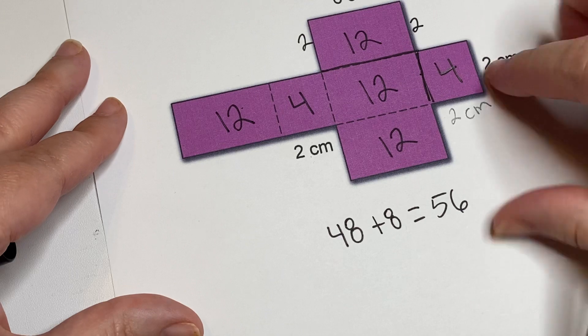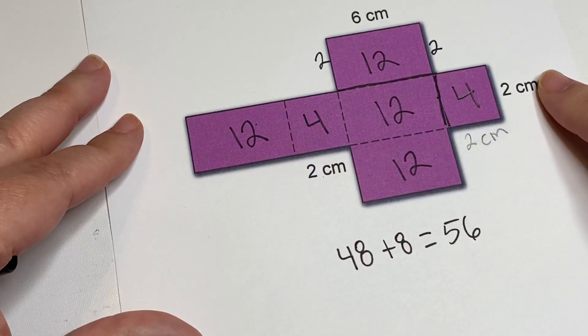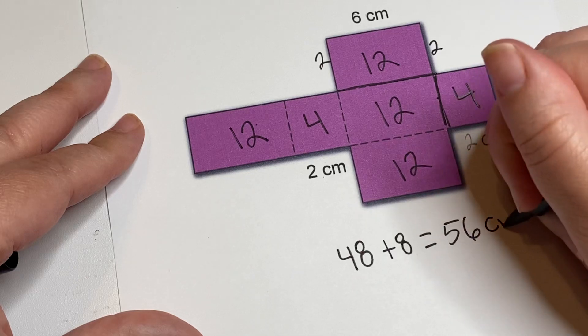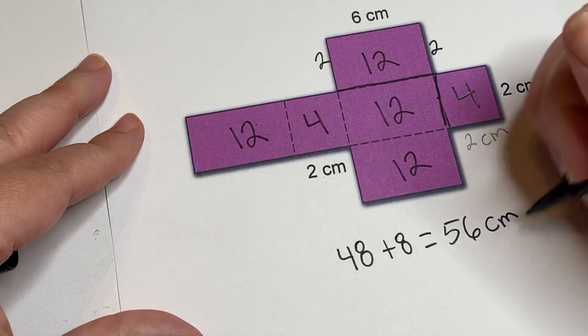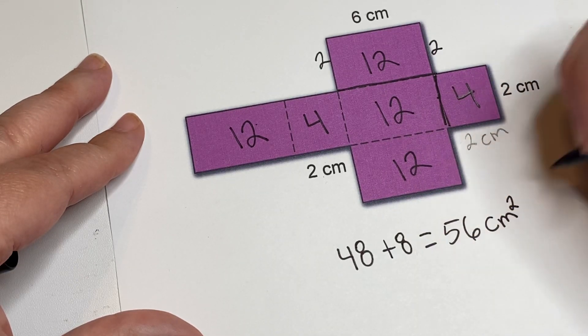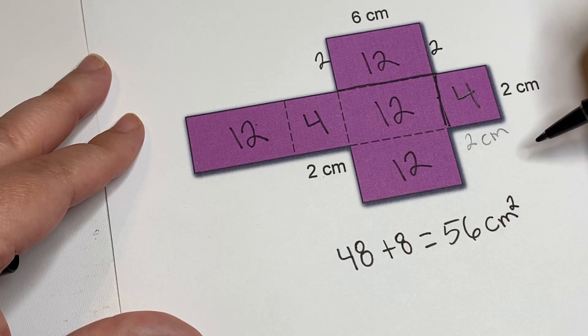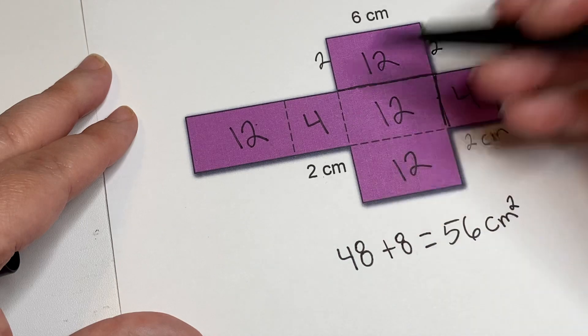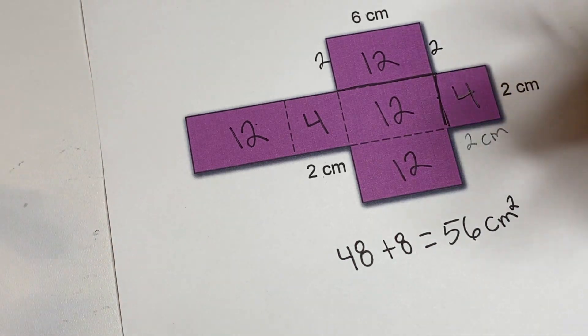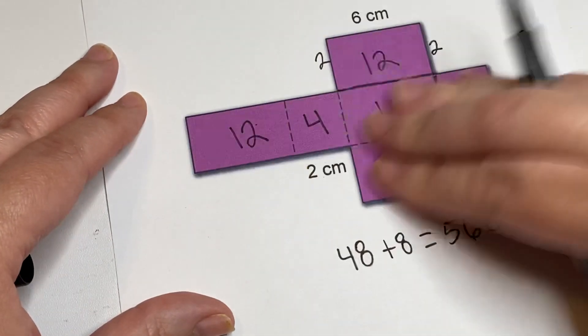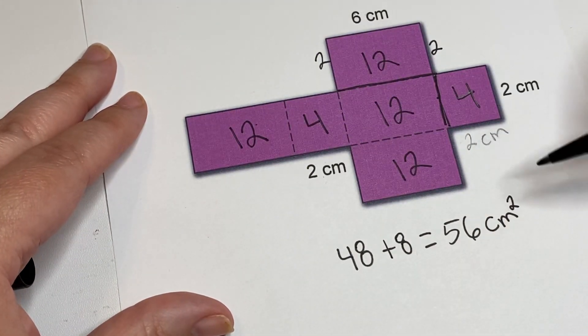So the surface area of this rectangular prism is 56 centimeters. And as you know, we're doing squared because we're talking about a surface. We're talking about an area, we're not talking about a perimeter, and we're not talking about the inside, the filling, the volume.